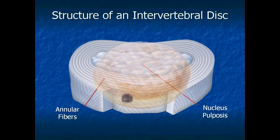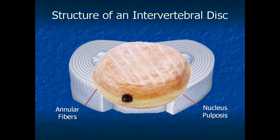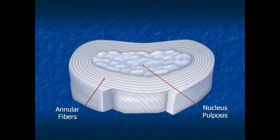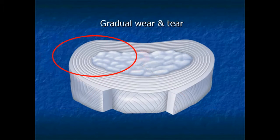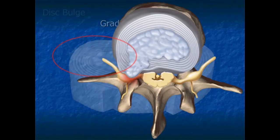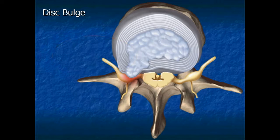Inside the center of a disc is material called the nucleus pulposus. Imagine a jelly filled donut — the annular fibers are the outside and the nucleus pulposus is the filling. Abnormal biomechanics of the vertebrae can cause gradual wear and tear on a disc's annular fibers. As the disc fibers weaken or become injured, a bulge of the disc can develop.